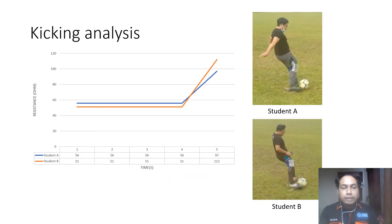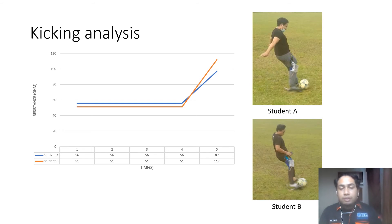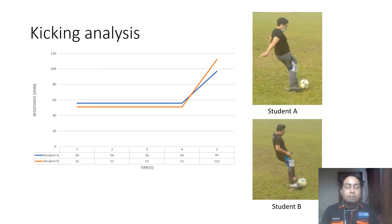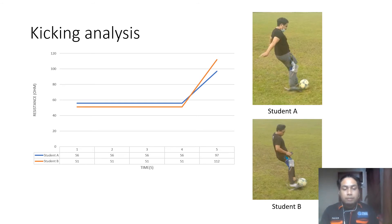For the kicking analysis, unfortunately I do not have an actual ACL patient, so I use myself as the injured person because I had a knee injury in the past. Student B represents the expected healthy result. Because I had a knee injury, the difference in strength between the two subjects is quite large.